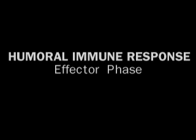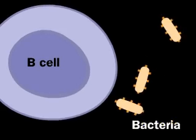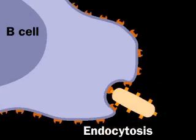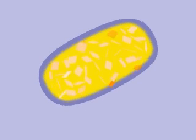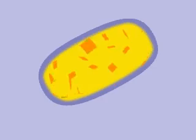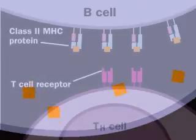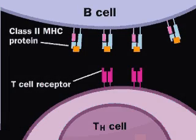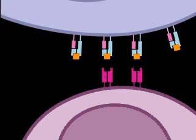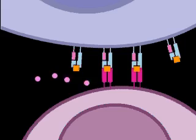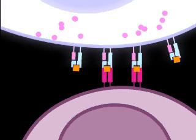In the effector phase of the humoral immune response, activated helper T cells help B cells develop into antibody-producing plasma cells. Consider a B cell which has encountered the same antigen as was recognized by the original helper T cell. The B cell processes the antigen and Class II MHC proteins transport the pieces for display on the B cell surface. Thus, the B cell becomes an antigen-presenting cell. If an activated helper T cell has the same specificity as the B cell, it can dock with the B cell and assist it by releasing cytokines.